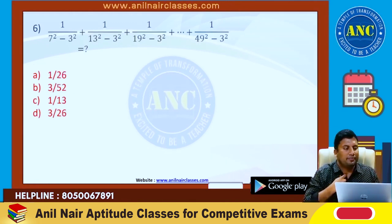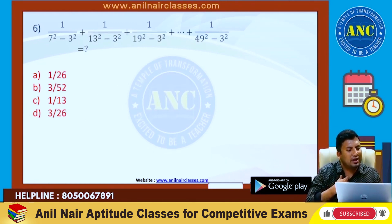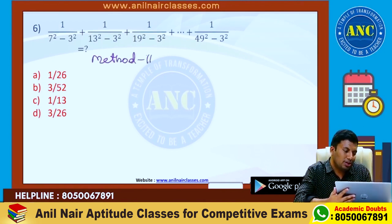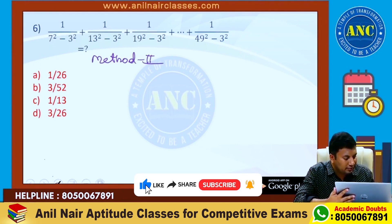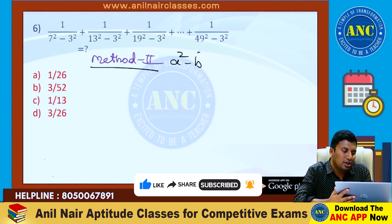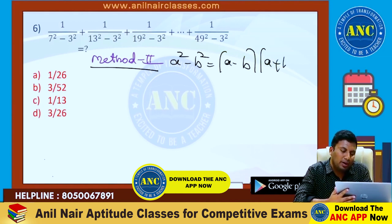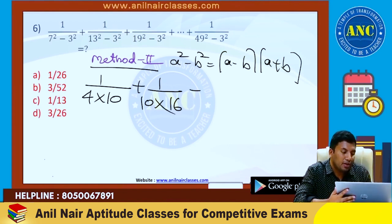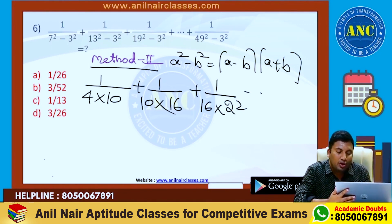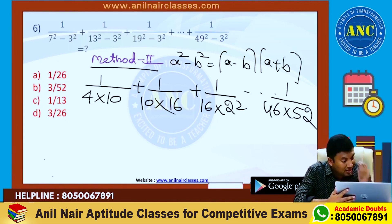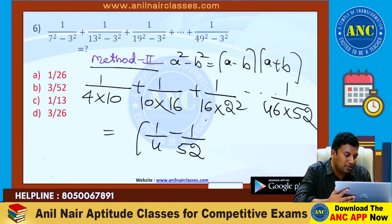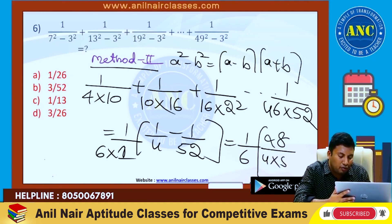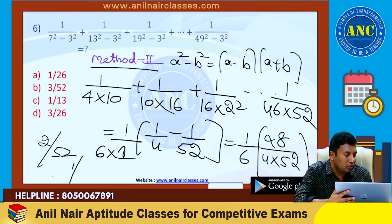Next one. See here: 1 by 7 square minus 3 square, plus 1 by 13 square minus 3 square, plus 1 by 19 square minus 3 square, up to 1 by 49 square minus 3 square. Method 2. A square minus B square is A minus B into A plus B. So: 7 minus 3 = 4, 7 plus 3 = 10; 13 minus 3 = 10, 13 plus 3 = 16; 19 minus 3 = 16, 19 plus 3 = 22; 49 minus 3 = 46, 49 plus 3 = 52. These are nothing but 1 by 4 minus 1 by 52. Common difference is 6. Answer is 1 by 6 into (52 minus 4) = 48 divided by (4 into 52) = 2 by 52, which is nothing but 1 by 26.